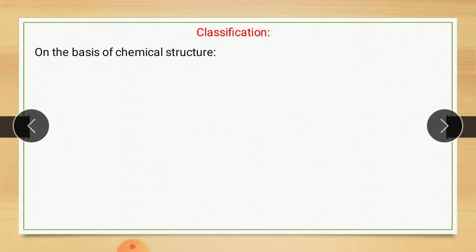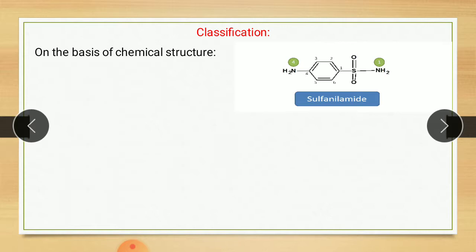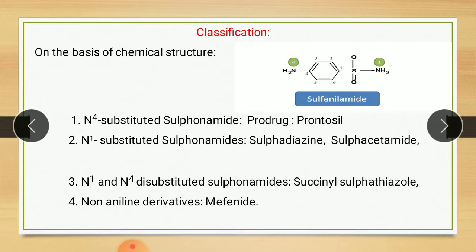The next point is classification, on the basis of chemical structure. This is the basic structure of sulfonamide. If you see this structure, it contains two nitrogens, that is two amino groups. The nitrogen which is directly attached to sulfur is called N1 nitrogen. The nitrogen which is directly attached to the aromatic ring is called N4. On the basis of this, sulfonamide is classified — the first class is N4-substituted sulfonamide.